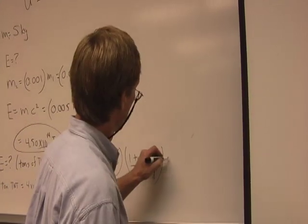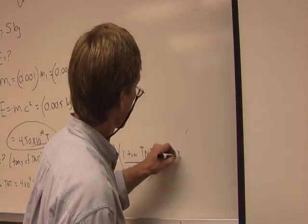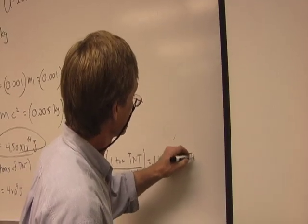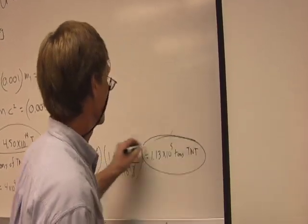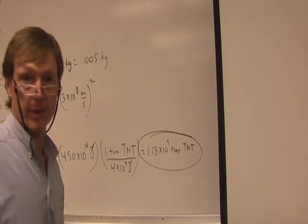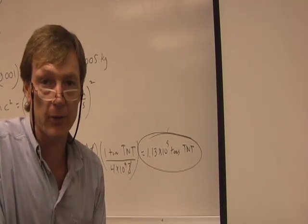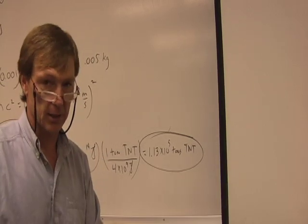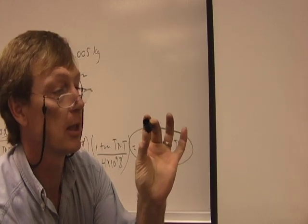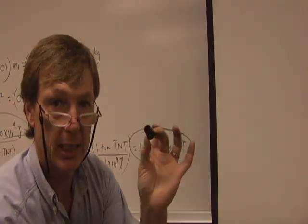So the energy released is 4.50 times 10 to the 14th joules. And this is a conversion. I know that one ton of TNT is equivalent to 4 times 10 to the 9 joules. And the joules cancel, so I'll get the equivalent of tons of TNT. So that's about 1.13 times 10 to the 5 tons of TNT. That's over 100,000 tons of TNT. That's 200,000 pickup trucks full of TNT. And all I'm doing is I'm converting this much mass into energy.